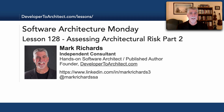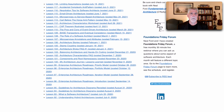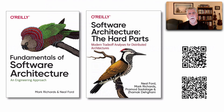Hello everyone, and welcome to Software Architecture Monday. My name is Mark Richards, and in this lesson, number 128, we'll take a look at Part 2 of Assessing Architectural Risk, a continuation from the prior lesson, number 127. You can find all of my lessons on my website, developer2architect.com/lessons. All of my lessons are derived from material taken from two books I've recently written with my friend and colleague, Neil Ford.